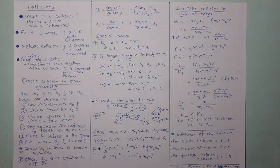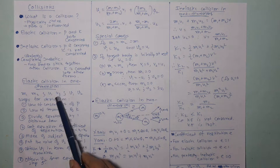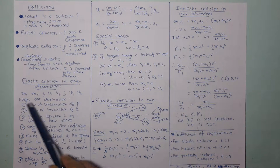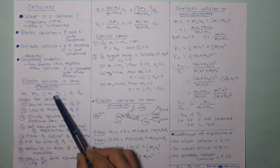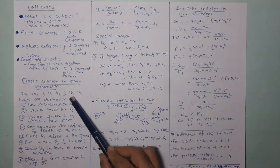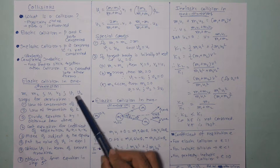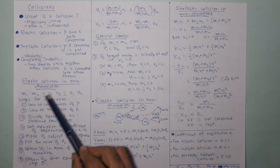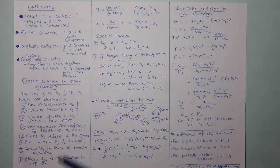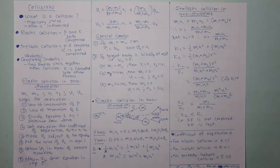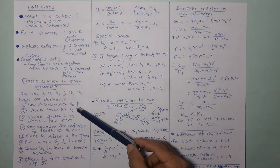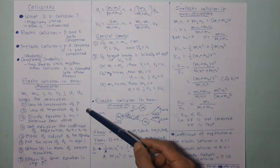Our objective is to find equations for V1 and V2 in terms of the known quantities: masses M1 and M2, and initial velocities U1 and U2. The steps for derivation are: first, use the law of conservation of momentum to get equation 1. Then use the law of conservation of kinetic energy to get equation 2.